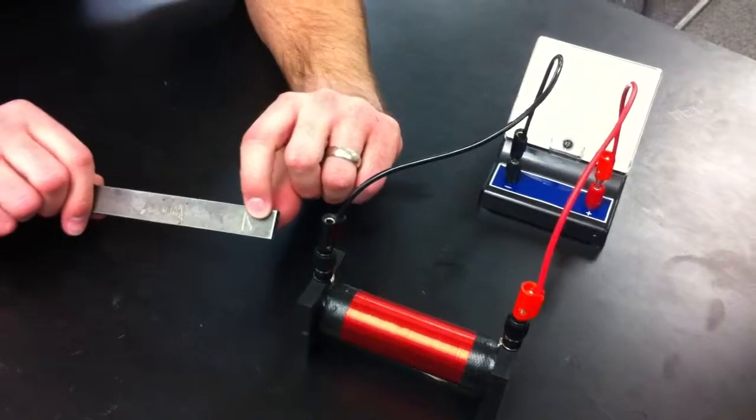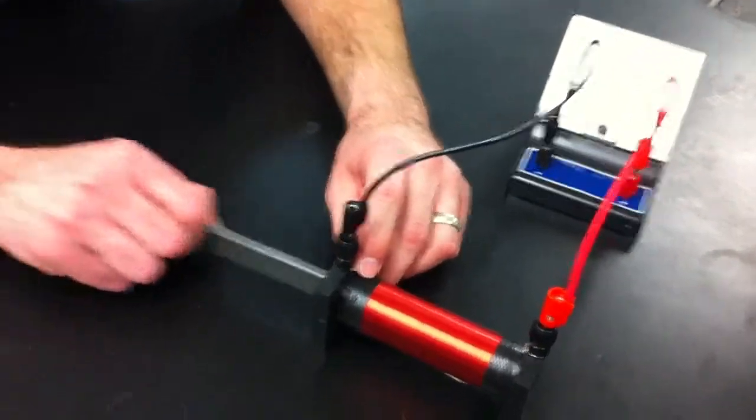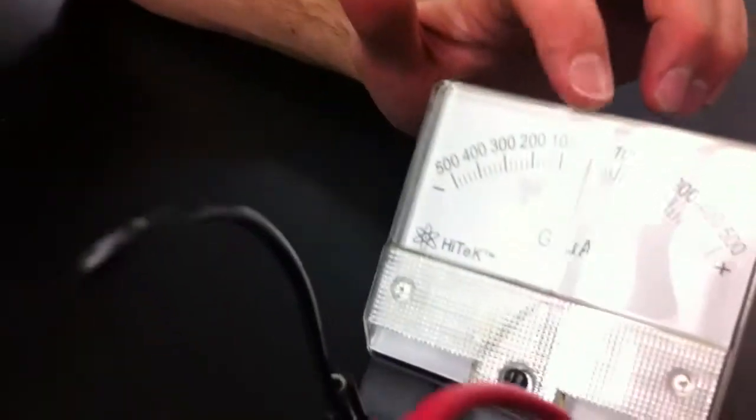That north pole is trying to push this magnet out. So notice we push the magnet in. When it's stationary we're okay, it's at zero.